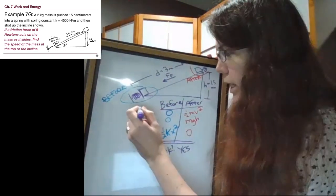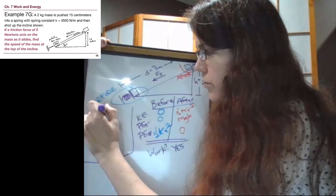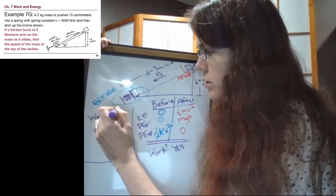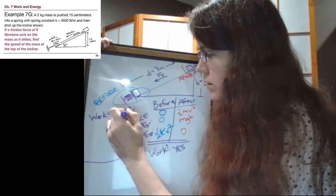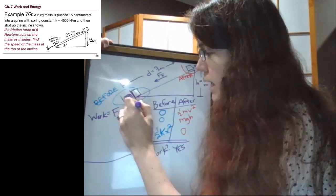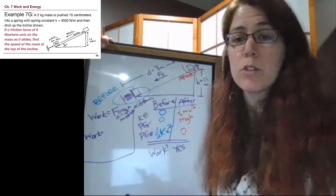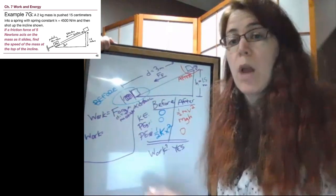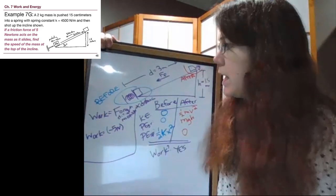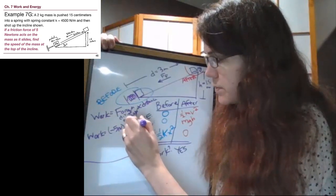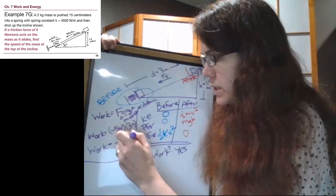Now it is worth noting that we should just go ahead and do this work term here before we get too much further. So work is the force in the direction of motion times the distance. Both of those things have to be here times distance. Okay, so the work term here is the amount of friction force, 5 newtons, but because it is against the motion it is negative 5 newtons worth of force in the direction of motion. And the distance here is 3 meters times 3 meters, which means that the work term when we put it in eventually is going to be negative 15 joules.